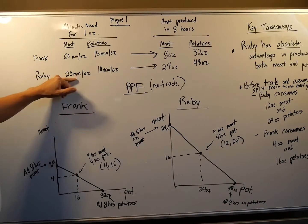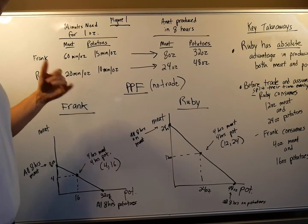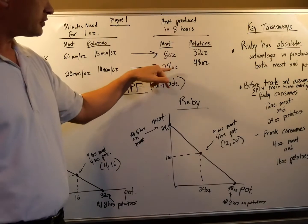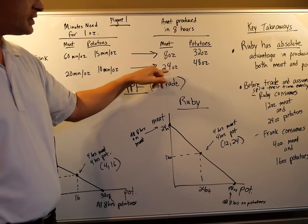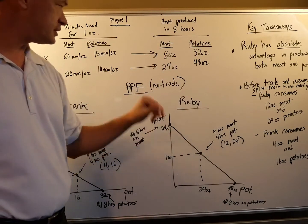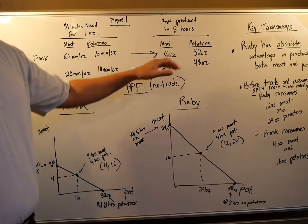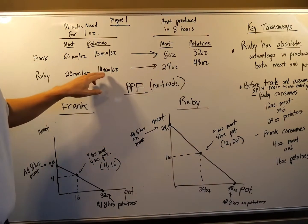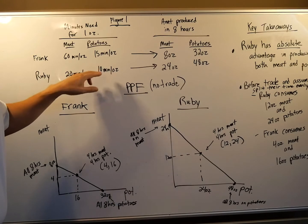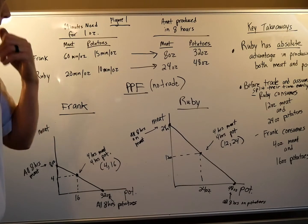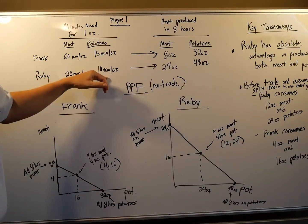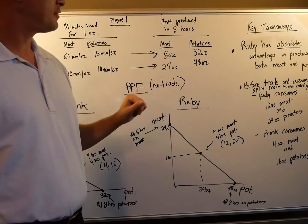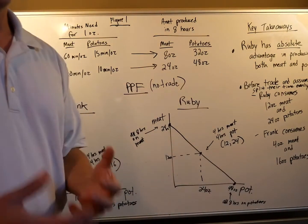Ruby, 20 minutes to make an ounce. So that means she can make three ounces an hour. Three ounces an hour times eight hours, she can make 24 ounces of meat in an eight hour period. So each day she makes, if she does all meat, no potatoes, she can make 24 ounces. Now for potatoes, it takes her 10 minutes to make one ounce of potatoes. So she can make six ounces per hour times eight hours, 48 ounces of potatoes. Again, Ruby has an absolute advantage in both.